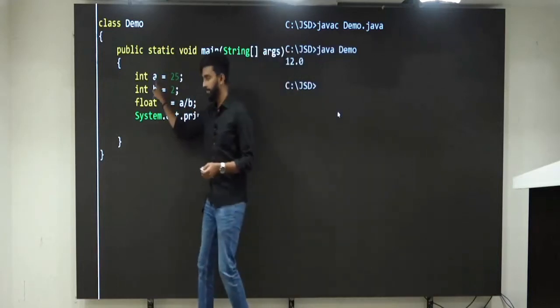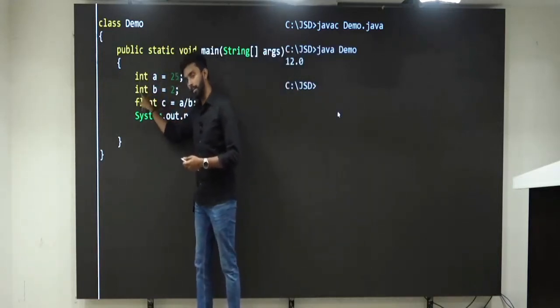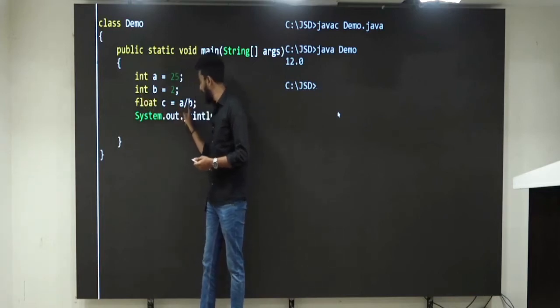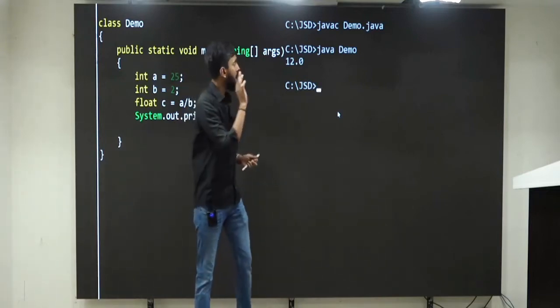Try to understand. Guys, what is A? Integer. What is B? Integer. A divided by B means integer divided by integer. Listen to me carefully.